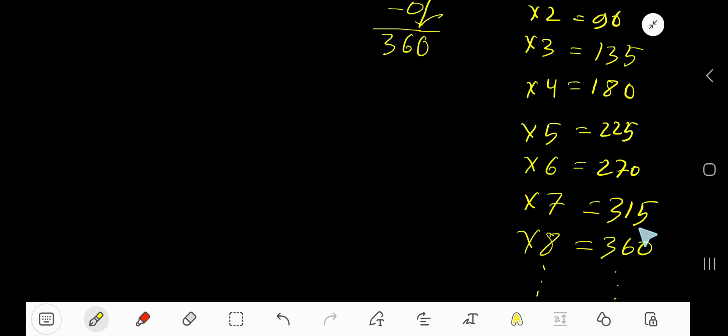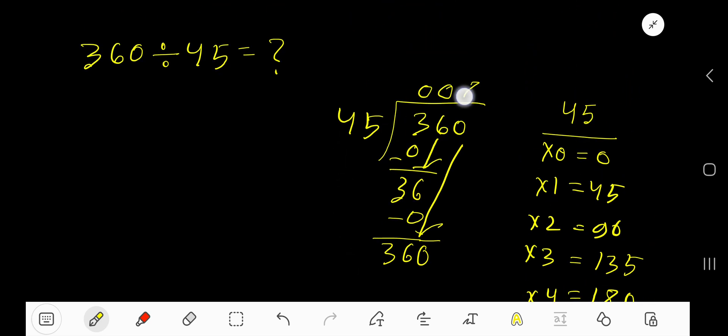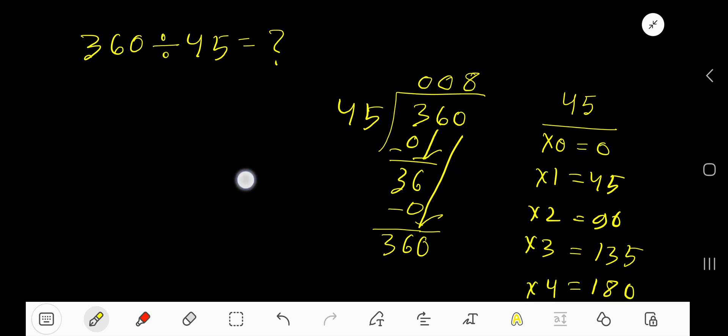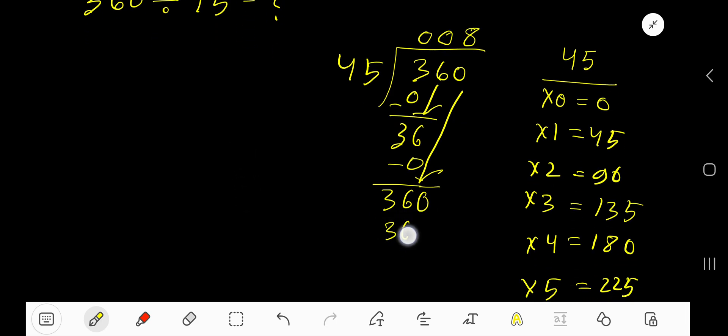45 times 7 is 315. 45 times 8 is 360. That is this number. This number is equal, so 8 times 360. Write 8. 8 times 45 gives us 360.